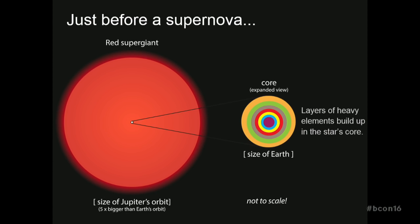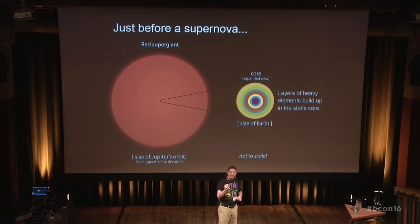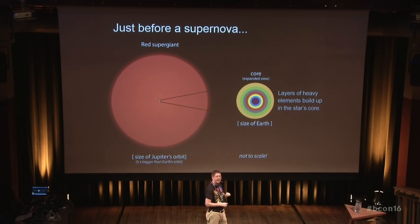Just before a supernova explosion — and here we're talking about stars that are many times the mass of our sun — the star has swollen up to an enormous size. Here the scale is five times bigger than our planet's orbit, or about a billion kilometers across. The core, on the other hand, is about the size of the Earth, and that's where all the action is happening. All the nuclear reactions that power the star are occurring in the core, and layer upon layer of heavy elements builds up in the core. Ultimately, that's what kills the star — that's what triggers the supernova explosion.